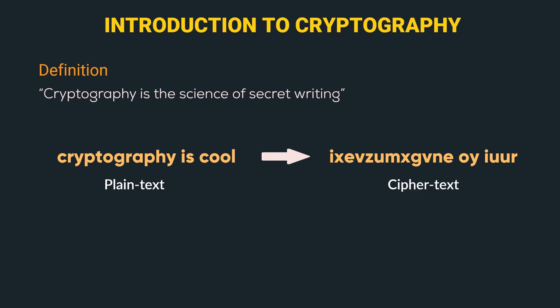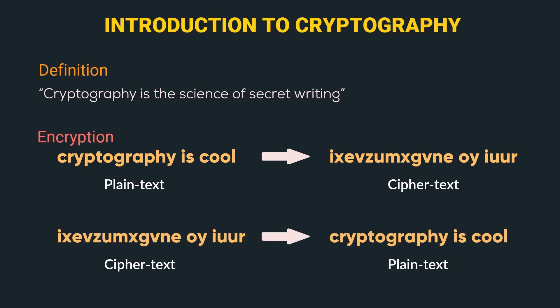The process of converting the plaintext to ciphertext is called encryption. But we also need a process to convert the ciphertext into plaintext, since plaintext is the one that we can understand. So this process is called decryption. Cryptography has a lot of such encryption and decryption algorithms, which we will cover in depth in the future videos.